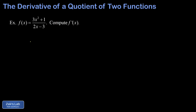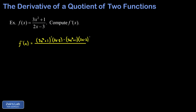Let's differentiate the rational function 3x squared plus one divided by 2x minus three. The quotient rule says we start with the derivative of the numerator — I'll use prime notation as a placeholder — times the denominator left alone. Then subtract the numerator left alone, which is 3x squared plus one, times the derivative of the denominator, again leaving a prime as a reminder. This is all divided by the original denominator squared.